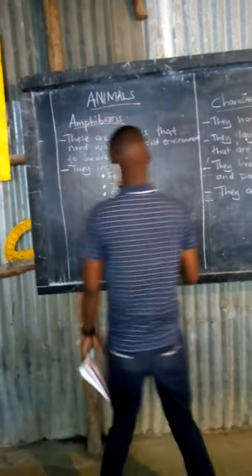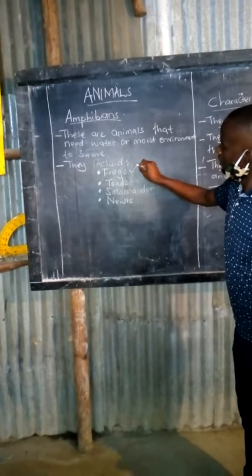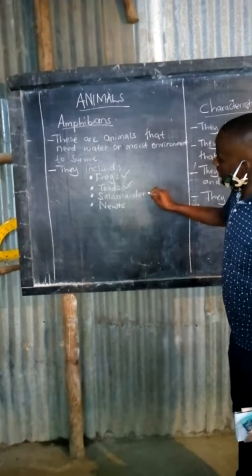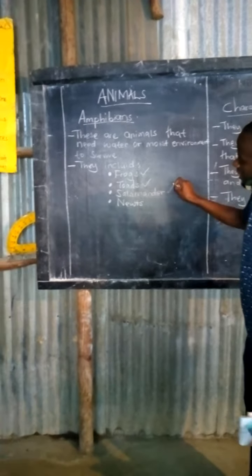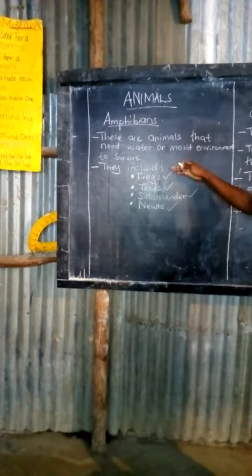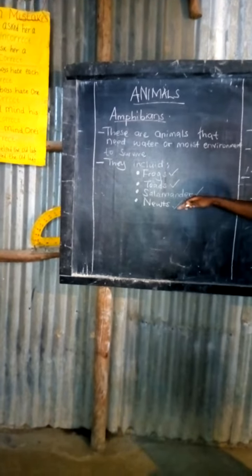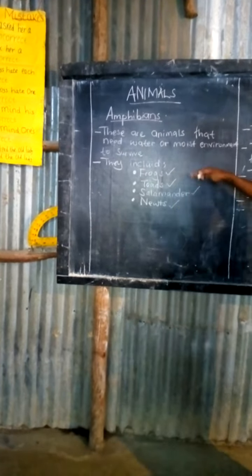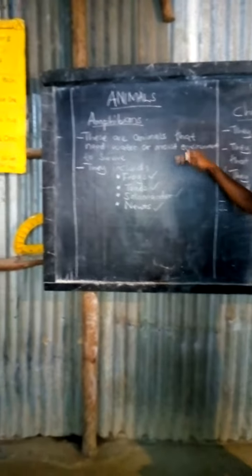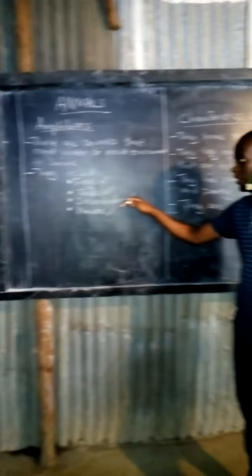Examples include frogs, toads, salamander, and newt. So these are examples of amphibians. Remember, they are animals that need water or a moist environment to live.